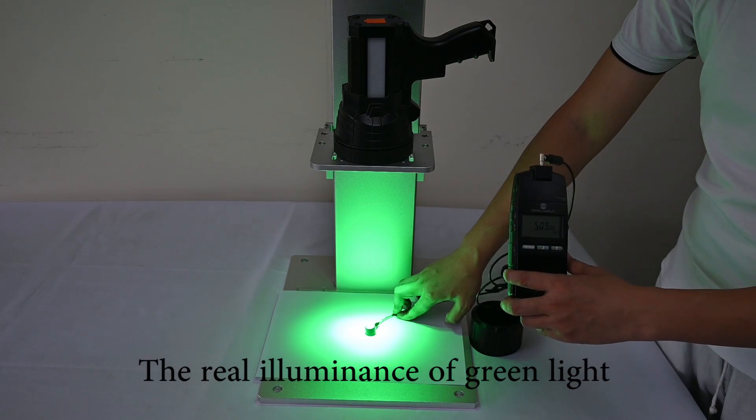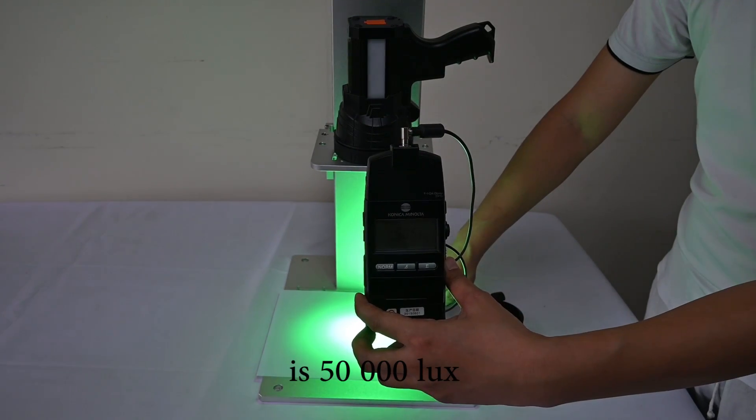You see, the real illuminance of green light is 50,000 lux.